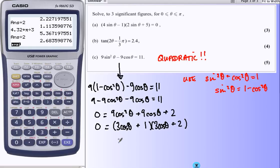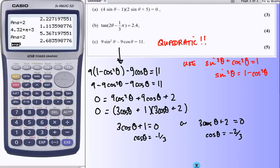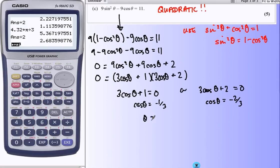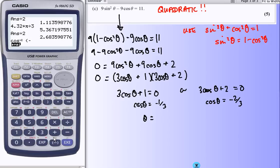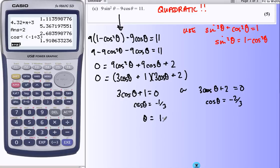So very much like the first one now. Two brackets equals 0. So either this one equals 0 or that one equals 0. cosθ is -1/3 or cosθ is -2/3. And I think we can get answers from both of these. So from θ equals -2/3 to the calculator. 1.91.